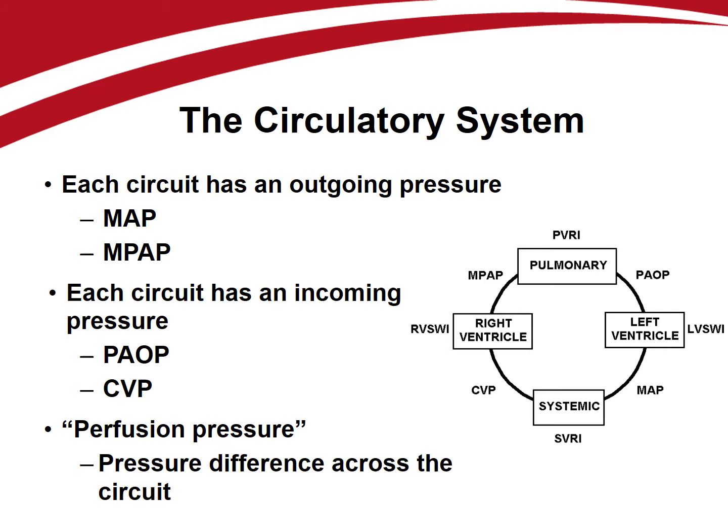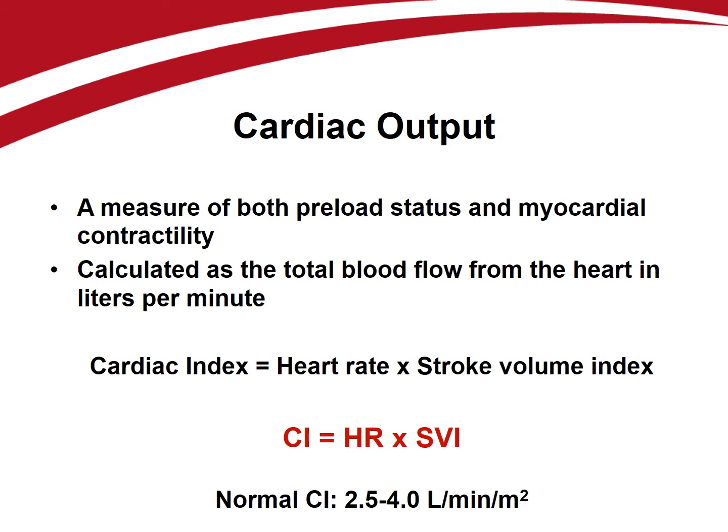The blood that flows around the two circuits is known as the cardiac output. We can use this parameter to assess the patient's preload status, as well as the second key hemodynamic monitoring question: what is the patient's contractility? Cardiac output is calculated by multiplying the patient's heart rate times the stroke volume, or volume of blood ejected from the heart with each beat. Note that we are using indexed variables here — cardiac index rather than cardiac output, and stroke volume index rather than stroke volume.